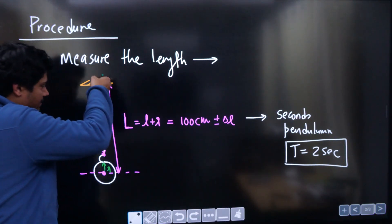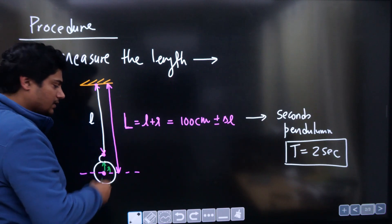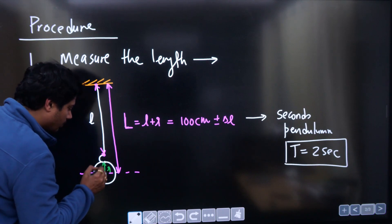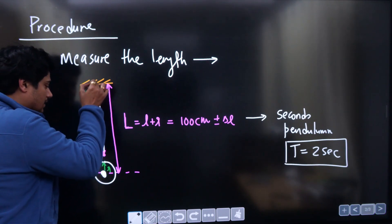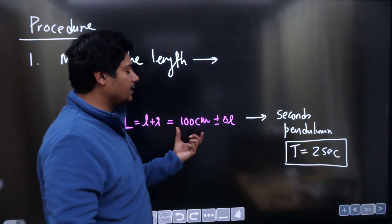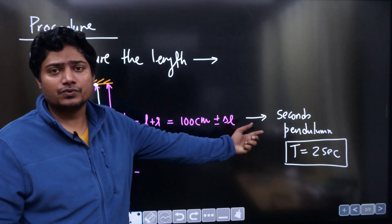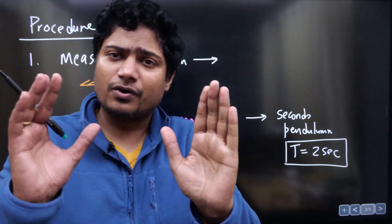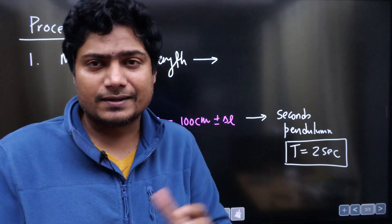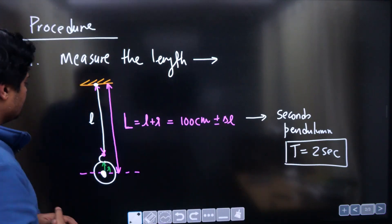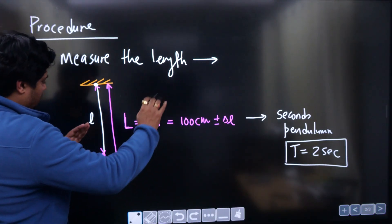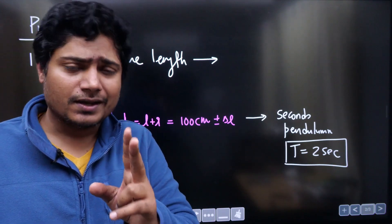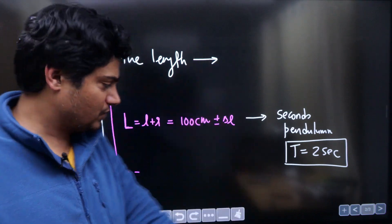We will adjust this cotton string so that the distance between the center of the bob and the top hinge is exactly 100 centimeters. That is the first thing you do in your experiment, so that every complete oscillation will be two seconds and it will be easy to calculate. For example, if it does ten oscillations, every oscillation contributes two seconds, so ten oscillations will be 20 seconds, and so on.